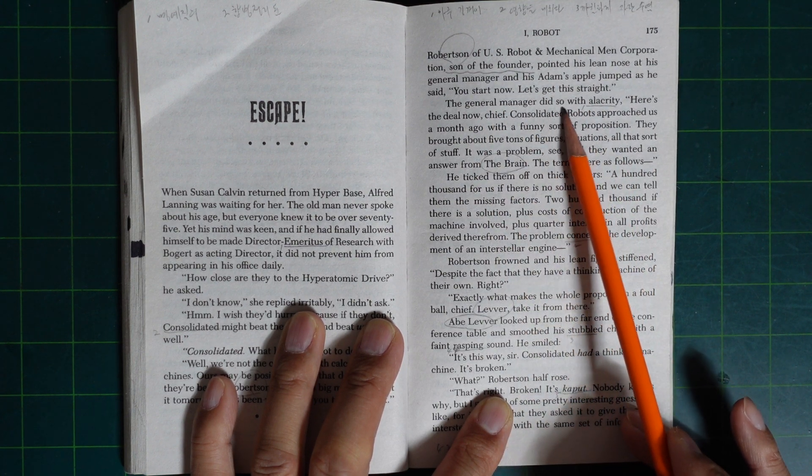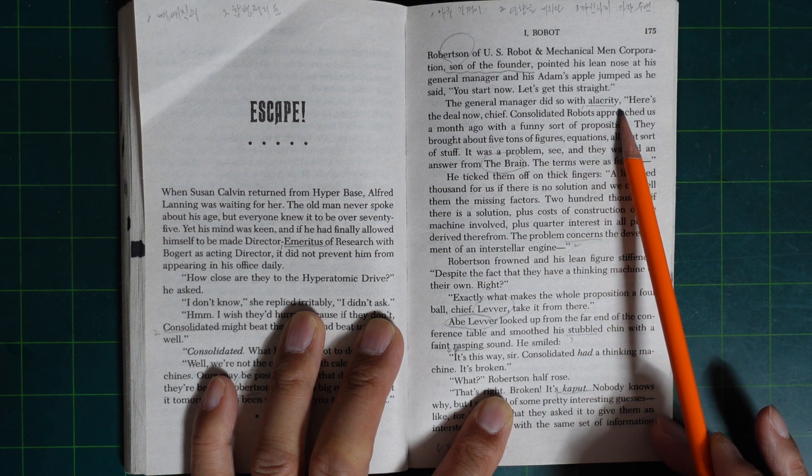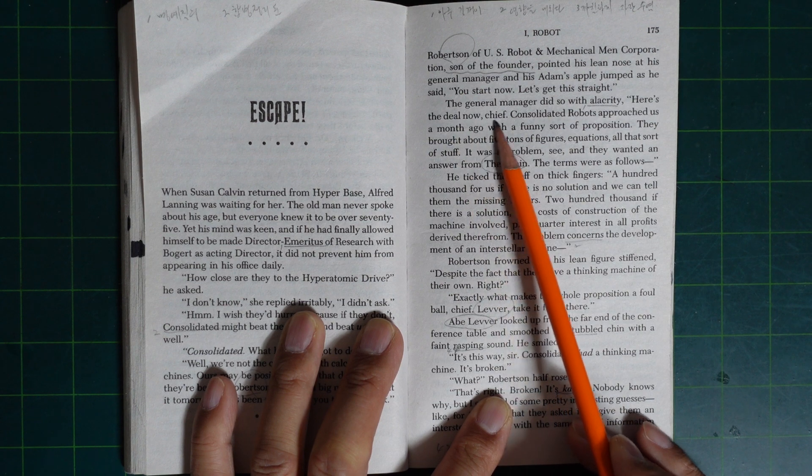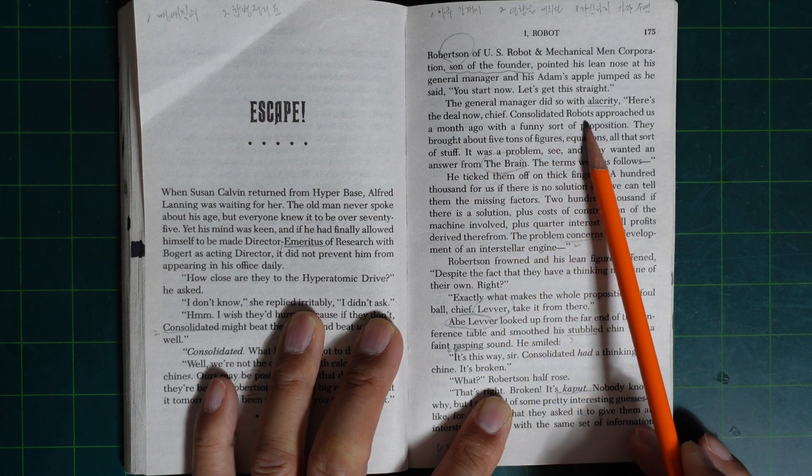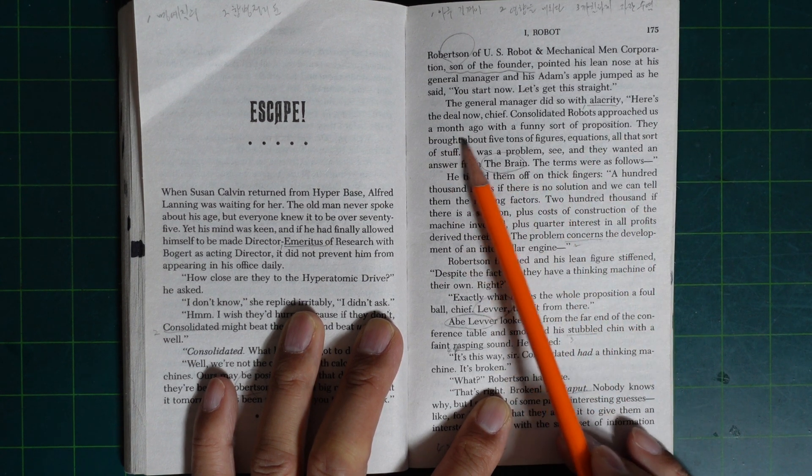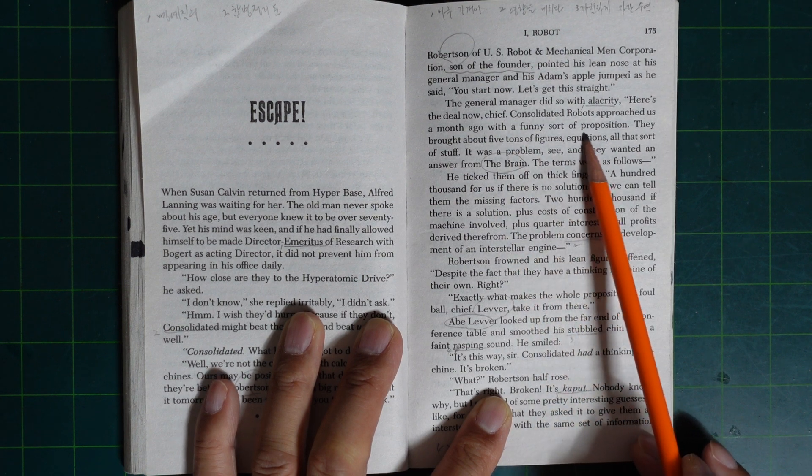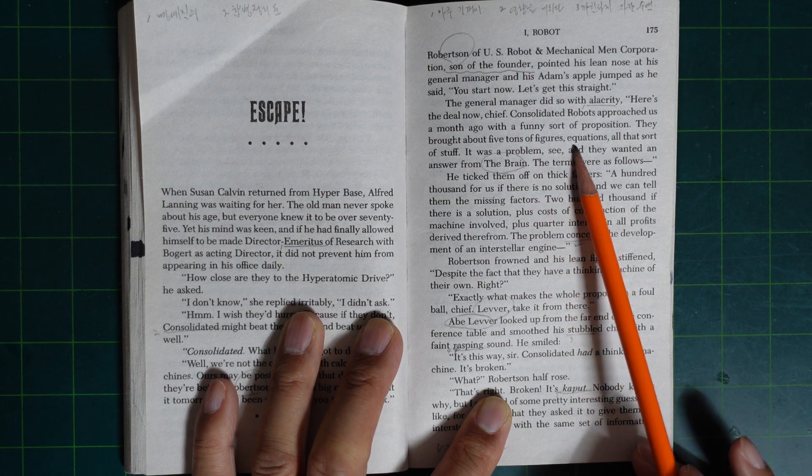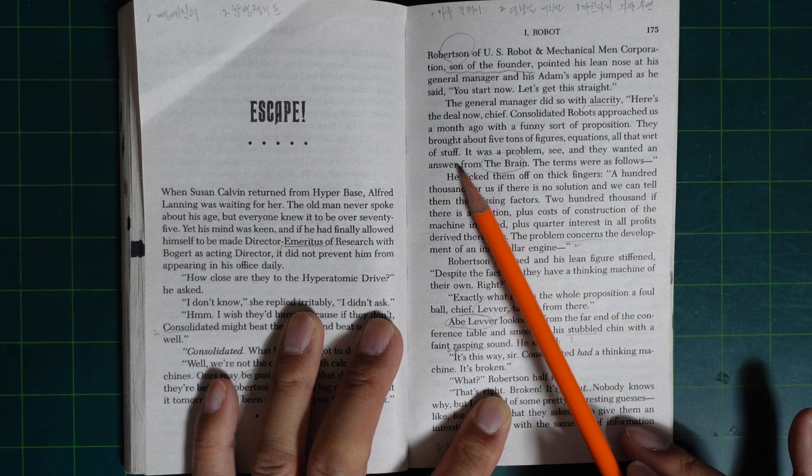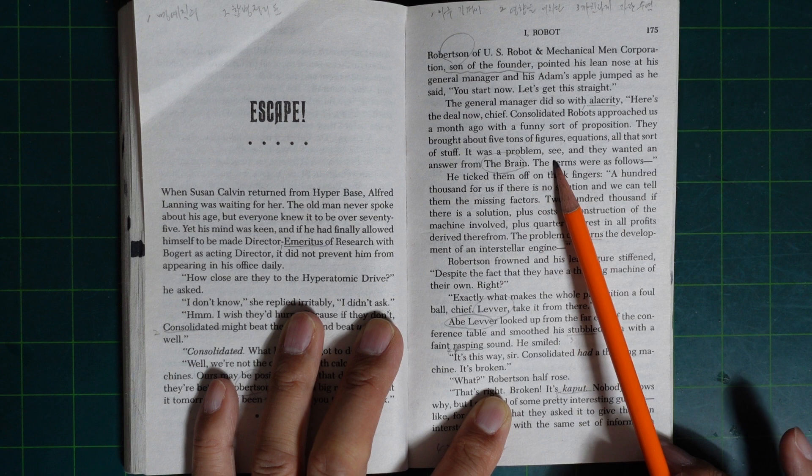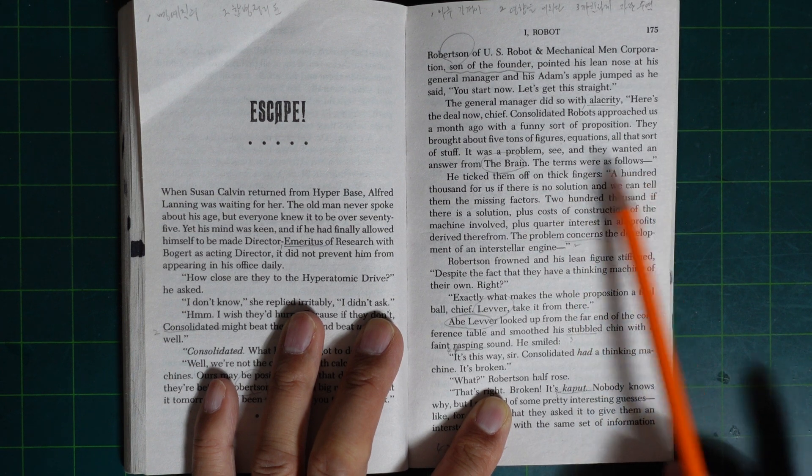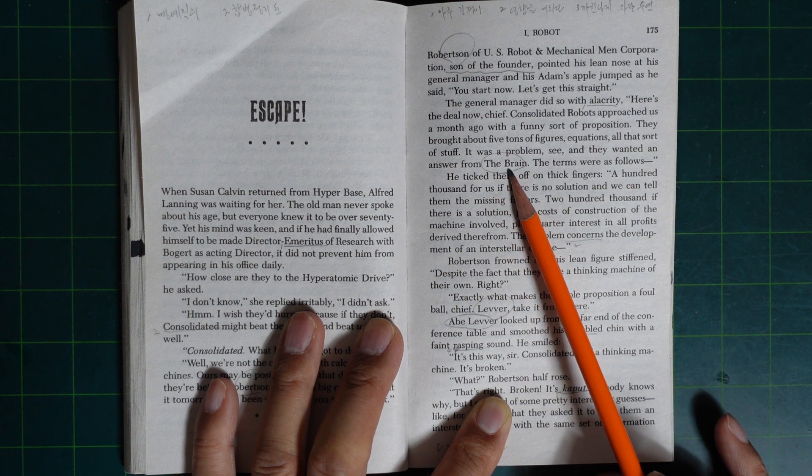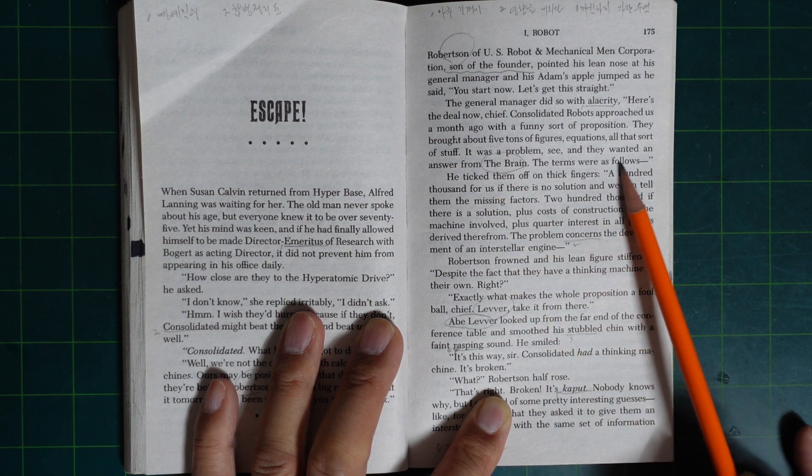The general manager did so with alacrity. Here's the deal then. Consolidated Robots approached us a month ago with a funny sort of proposition. They brought about five tons of figures, equations, all that sort of stuff. It was a problem, see?